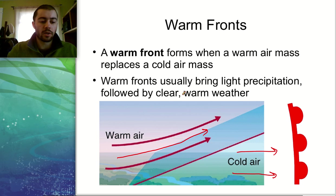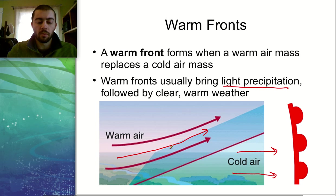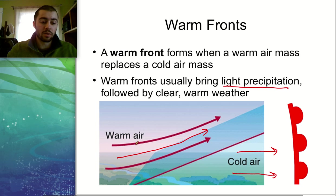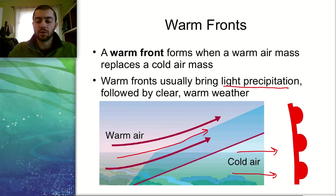A warm front and cold front are going to bring very different types of weather. With a warm front, you may see some light precipitation at the boundary as the warm air rises. But once that's done, you're going to be looking at clear, warm weather — this warm air mass is going to be pretty generally pleasant.